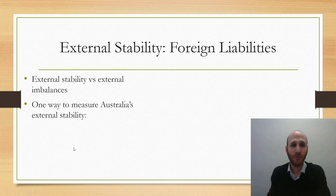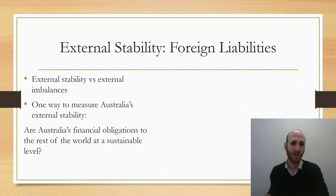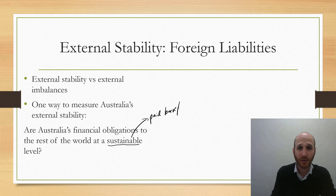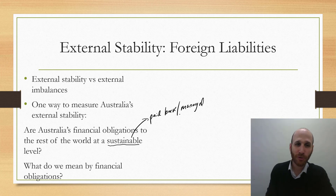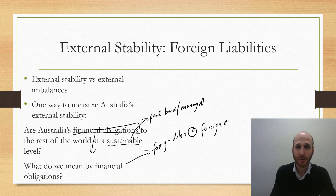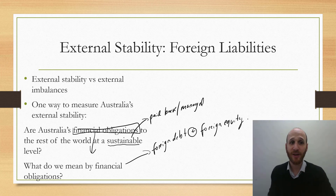One way to measure Australia's external stability is to consider this question: are Australia's financial obligations to the rest of the world at a sustainable level? This is the key term — are they sustainable? Can they be paid back or managed? And when we talk about financial obligations, we mean foreign debt and foreign equity.